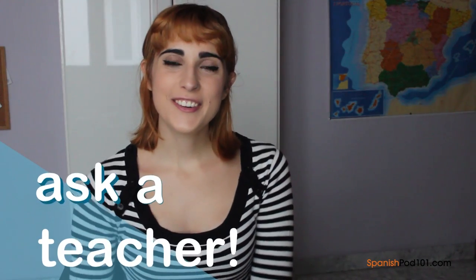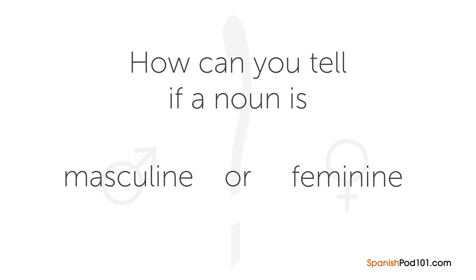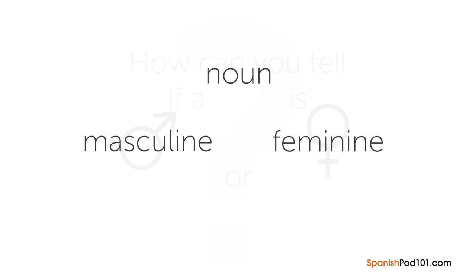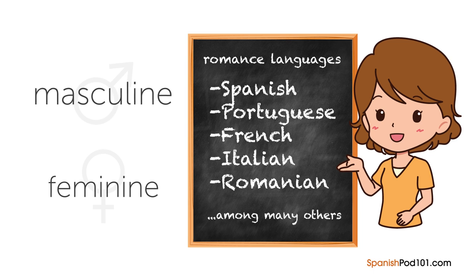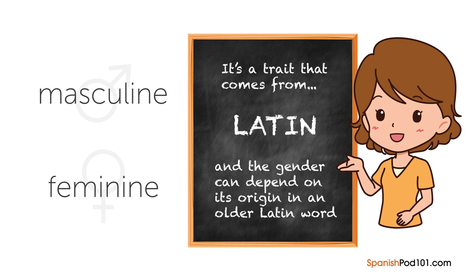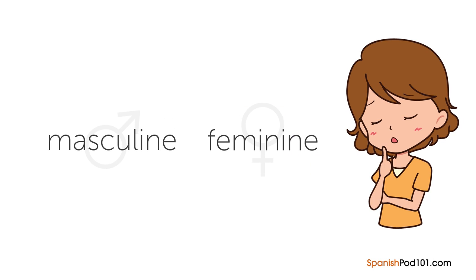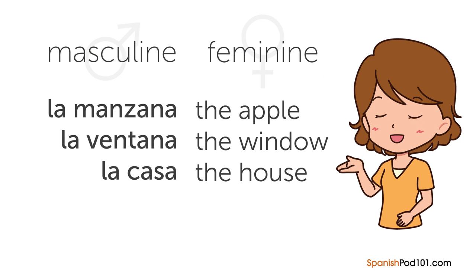Hi everybody, Rosa here. Welcome to Ask a Teacher, where I'll answer some of your most common Spanish questions. The question for this lesson is: how can you tell if a noun is masculine or feminine? In Spanish, every noun has a gender that applies to plural nouns too — a trait that comes from Latin. The easiest way to tell the gender of a noun is to look at the last letter. The general rule is that if a noun ends in A, it is feminine.